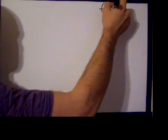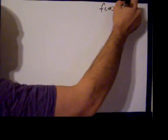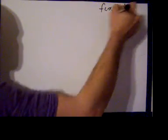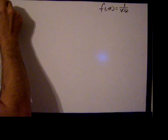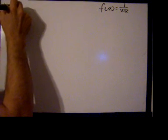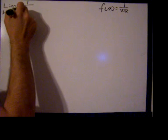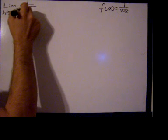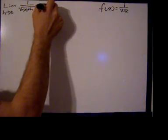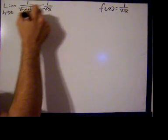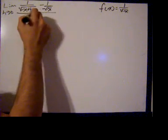Today we'll be taking the derivative by definition of f(x) = 1 over the square root of x. We'll start by taking the limit as h goes to 0 of 1 over the square root of x plus h, minus 1 over the square root of x, all over h.